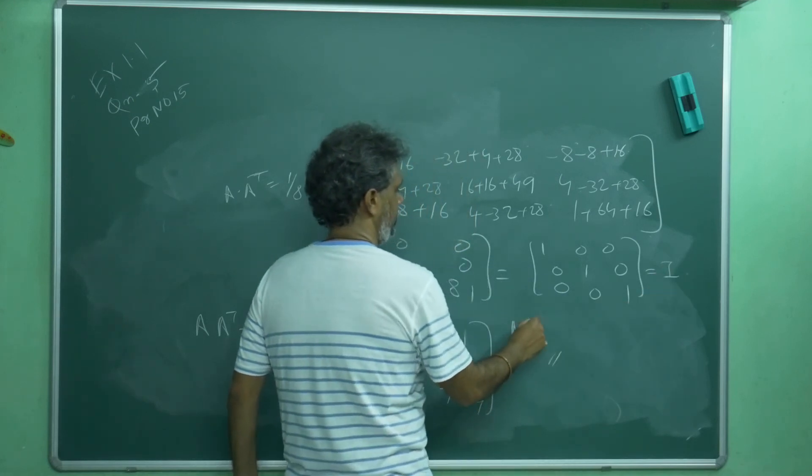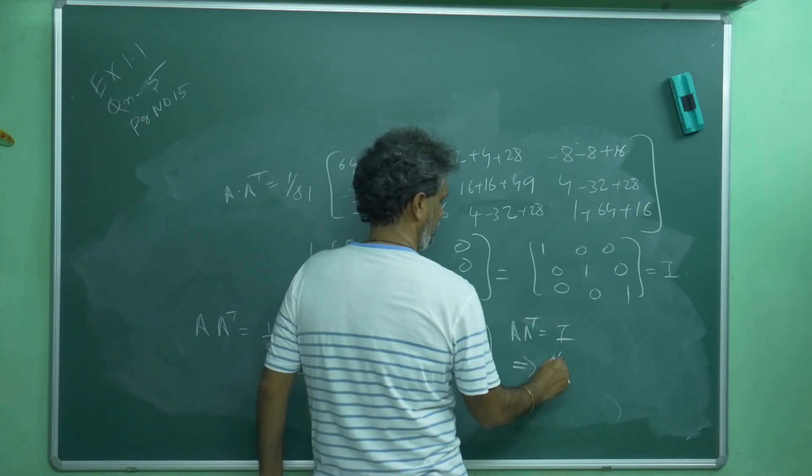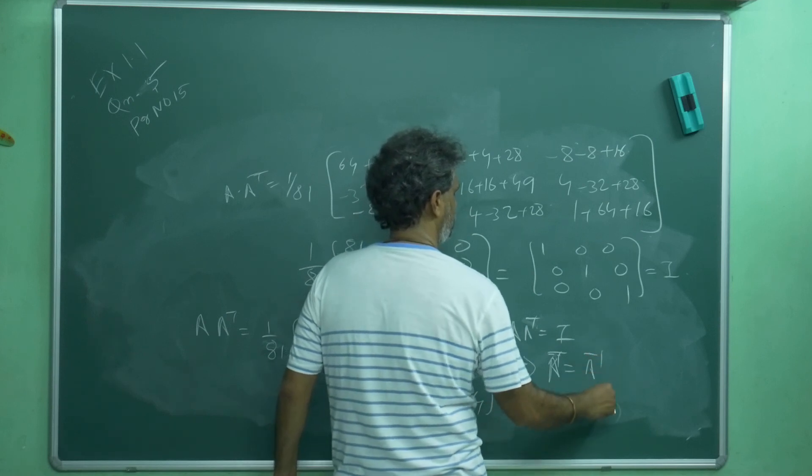A into A T is equal to I implies A T is equal to A inverse. Proved.